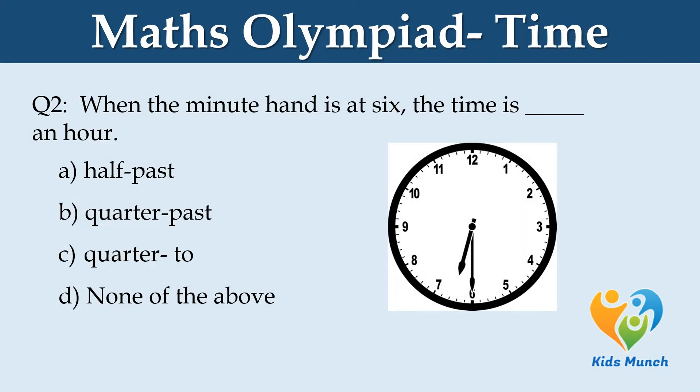When the minute hand is at 6, the time is dash an hour. Option A: half past. Option B: quarter past. Option C: quarter to. Option D: none of the above.